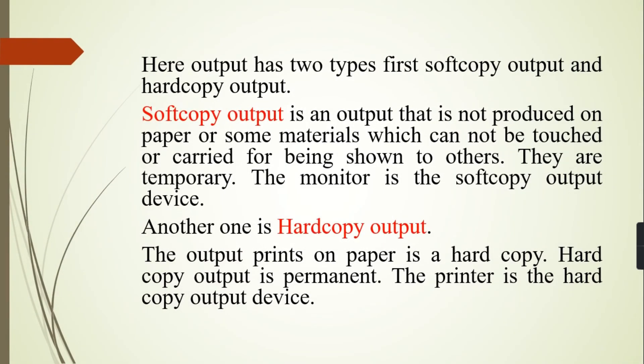Soft copy output is output that is not produced on paper — it cannot be touched or carried to be shown to others, and it is temporary. The monitor is the soft copy output device. Hard copy output is output printed on paper and is permanent. The printer is the hard copy output device.